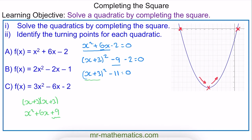From this point we can work out the coordinate of the turning point, which is the minimum value this function can possibly have. When we square any number, the result can never be negative, which means the lowest this could possibly be is 0. For this to be 0, x has to equal negative 3. So when this does equal 0, we have 0 take away 11, which is negative 11. So if x is negative 3, y is negative 11.